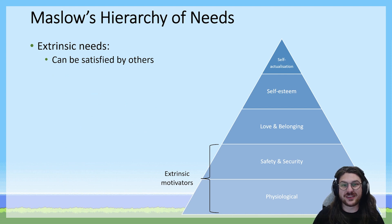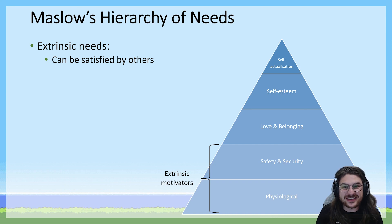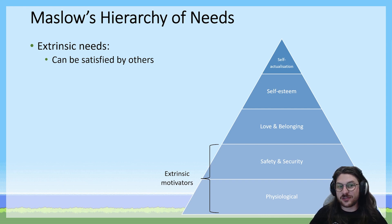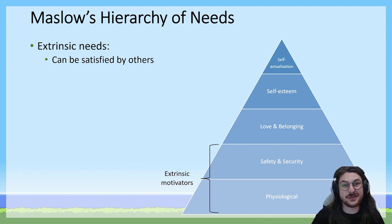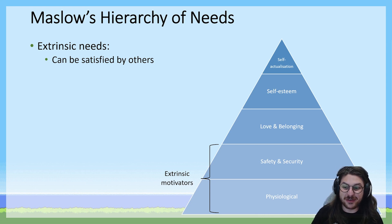Maslow's motivators can be broken down into two categories. First, there are the extrinsic needs — the base level motivators: the physiological needs and the safety and security needs. These are described as extrinsic because they can be satisfied by others. Extrinsic means outside of yourself. Someone can bring you food and water, build you shelter, clothe you, and certainly keep you safe. Businesses are able to provide these things for employees to help ensure their base level motivators are met.